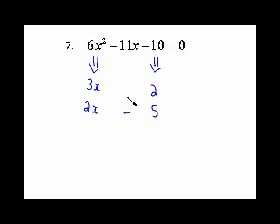I've got the negative with the 5, positive with the 2, and I'm feeling good about this one. 3x times negative 5 is negative 15x, and 2x times positive 2 is positive 4x. When these get added together we get negative 11x. So 3x plus 2 times 2x minus 5.